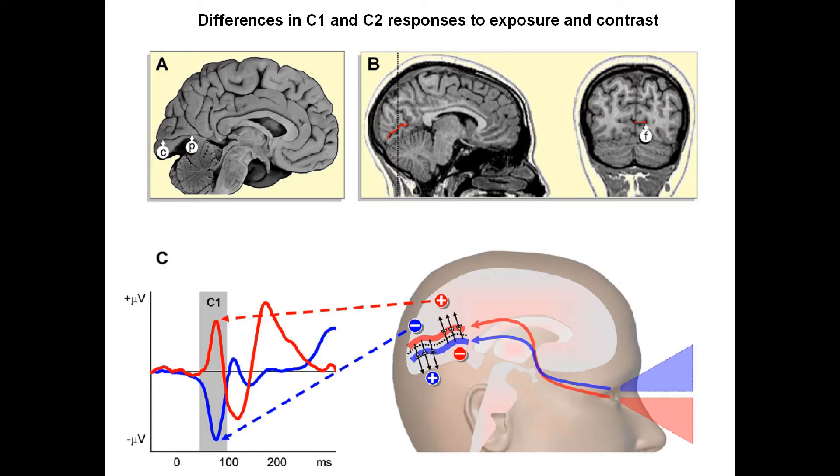We are going to stimulate independently those two parts of our visual field and subsequently subtract one waveform from the other waveform in order to achieve a difference wave. This difference wave is going to show us a few important components. The first one is called C1. It is neither P nor N because of the alternating polarity as a function of where do we stimulate. This is the very early visual component which we can record from the cortex. It starts about 50 milliseconds post-onset of the stimulus and peaks 20 milliseconds later.